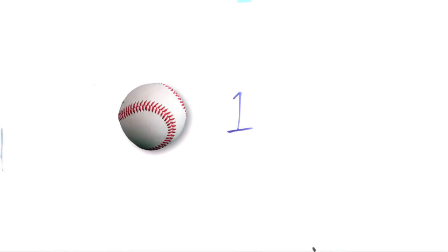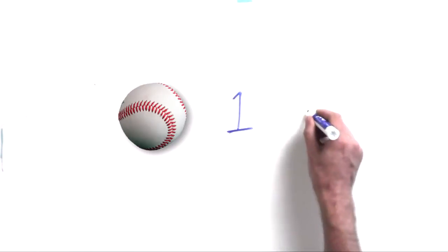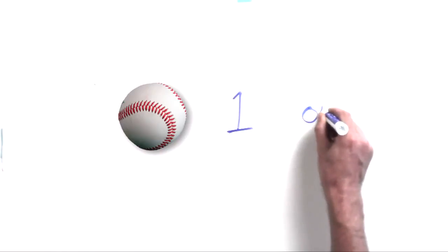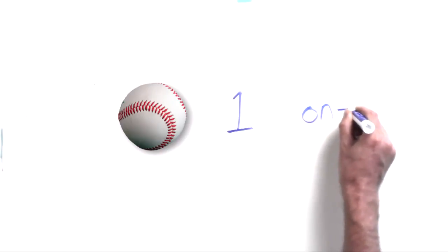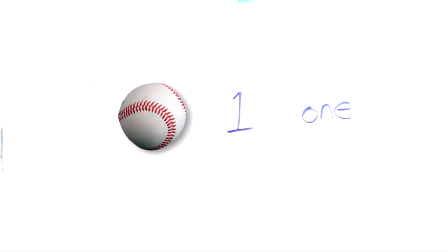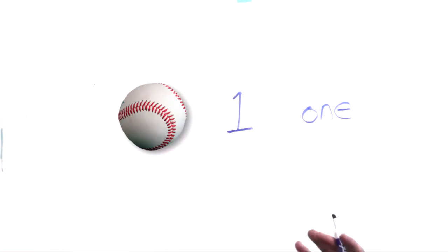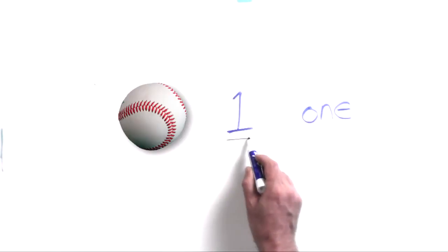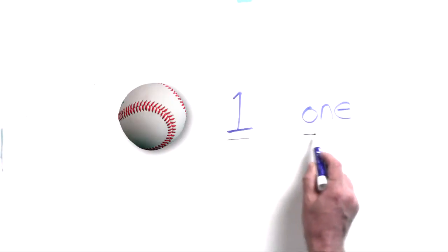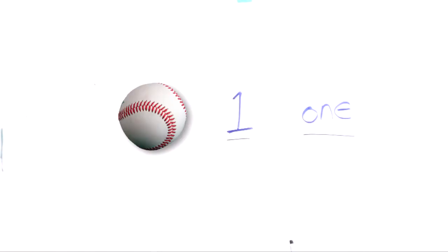And now let's write the word one — O-N-E. Pretty easy like that. That's all we have to do. I want you to practice that. Practice writing the number one and the word one.